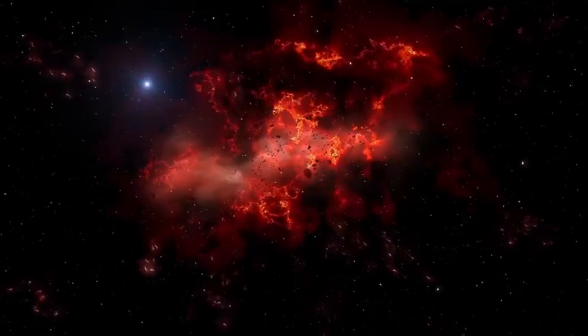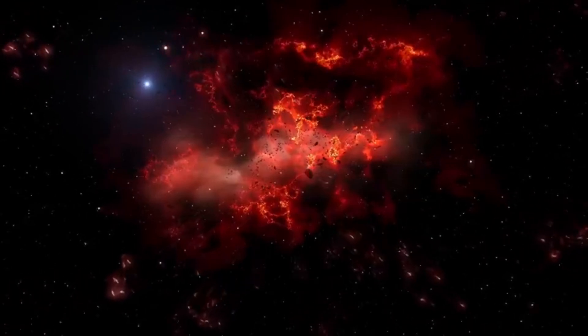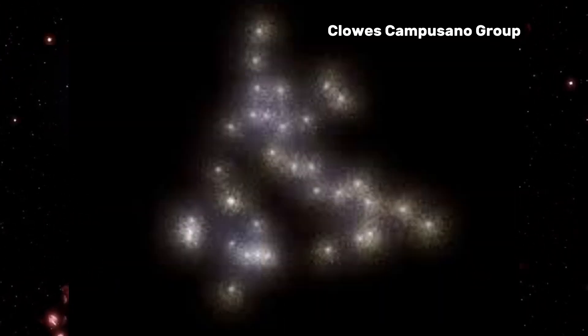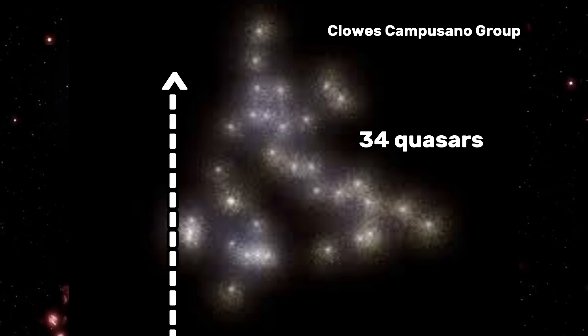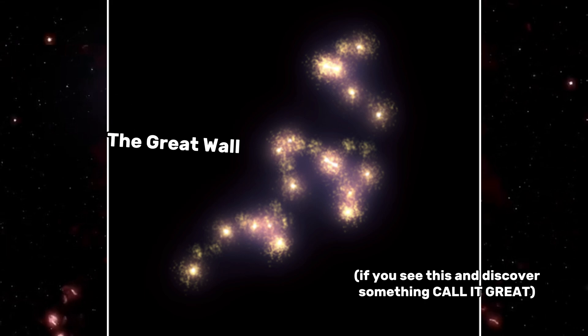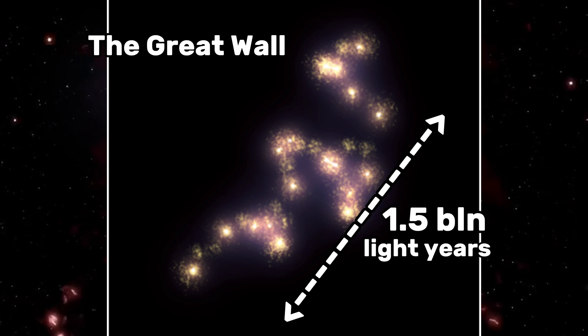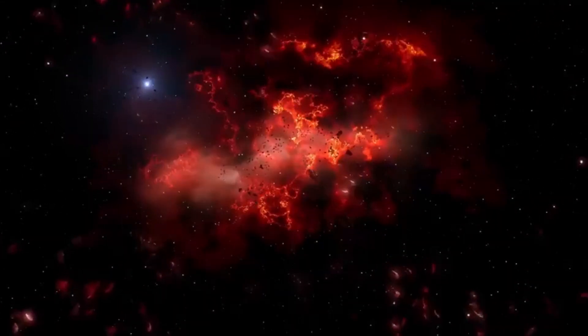I won't let these two take all the credit, of course. Other astrophysicists have discovered other megastructures, including the Clos Camposano group, a group of 34 quasars that extends over 2 billion light-years, the Great Wall, which is a collection of galaxies that is 1.5 billion light-years in diameter.